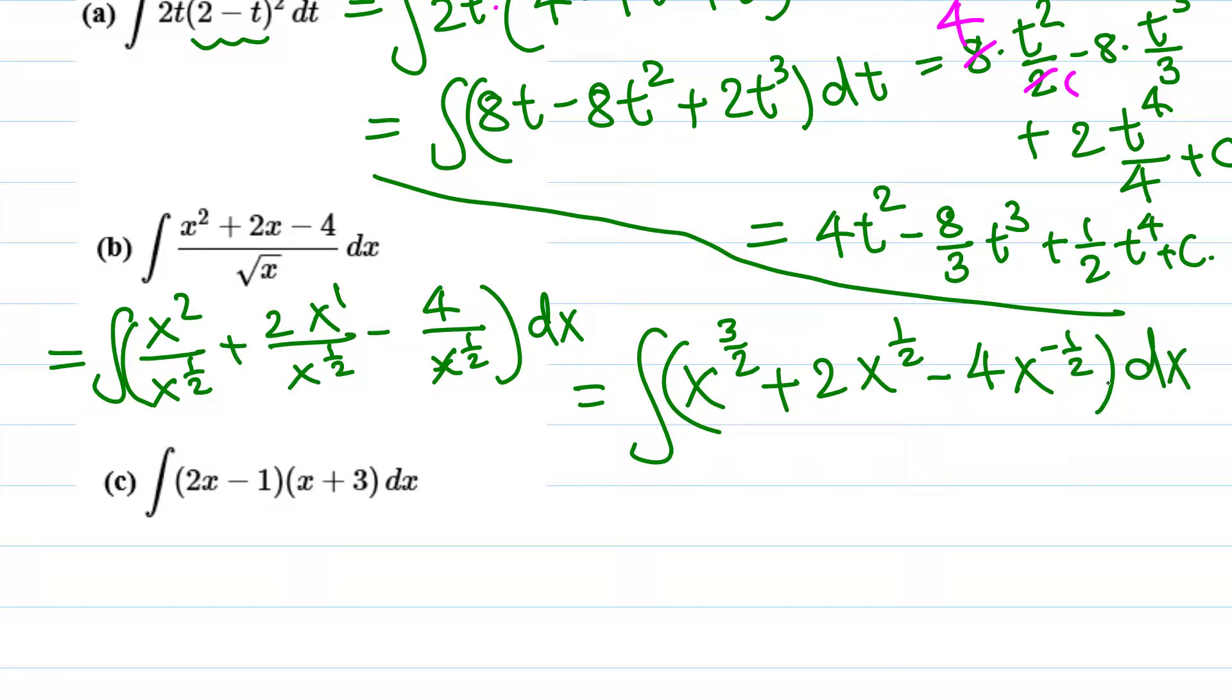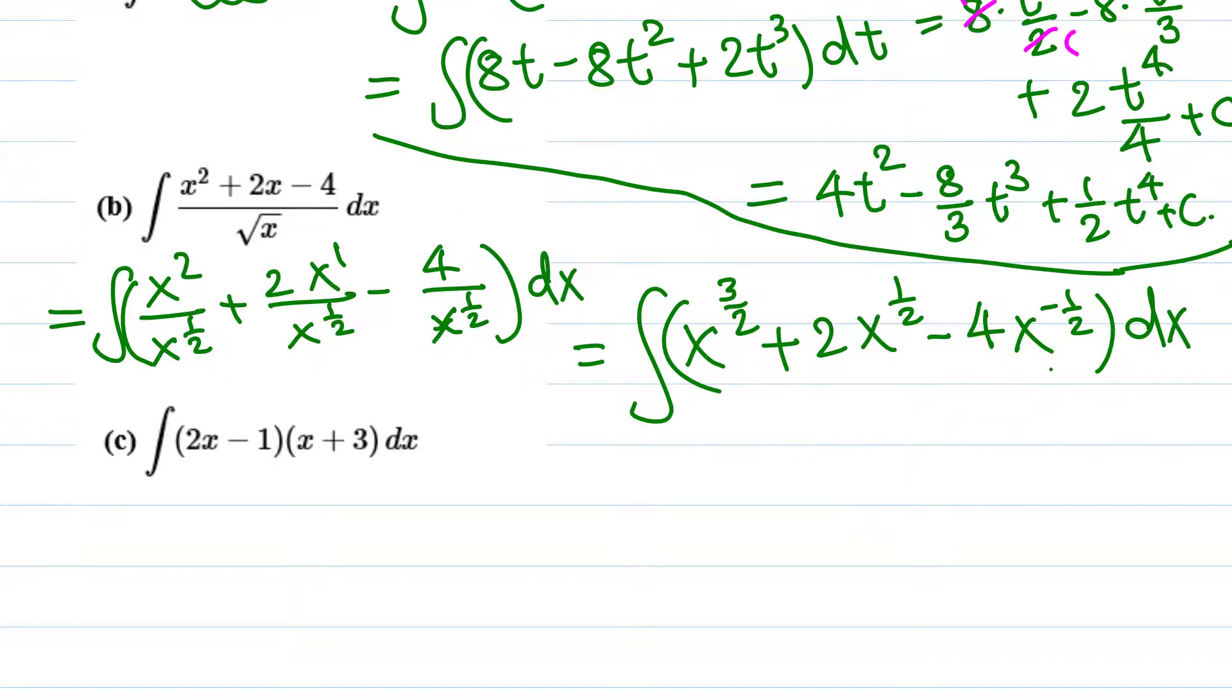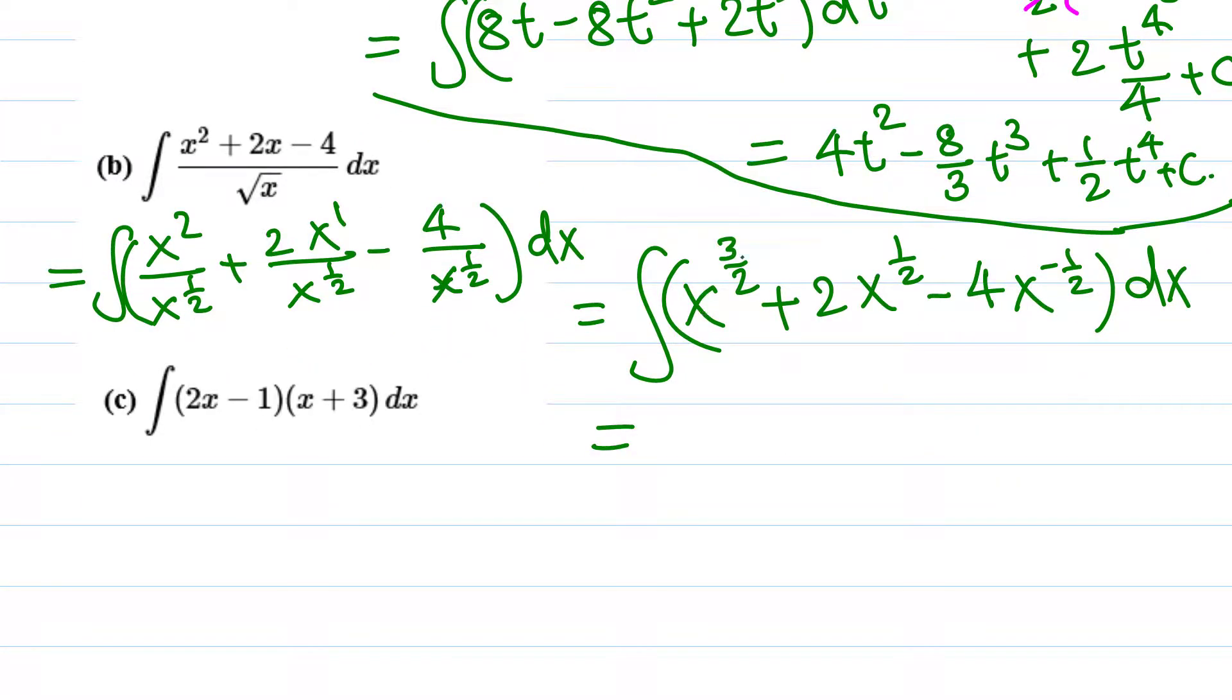So we have the integral of all these three terms with respect to x. Using the power rule, x^n becomes x^(n+1). 3/2 plus 1 is 5/2, divided by the new exponent. Plus 2 times x^(1/2 + 1) = x^(3/2) divided by 3/2. Minus 4 times x^(-1/2 + 1) = x^(1/2) divided by 1/2, plus C.